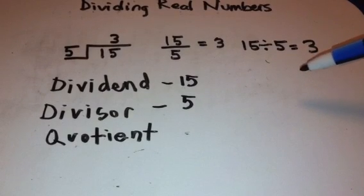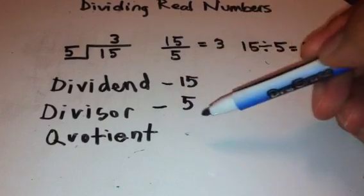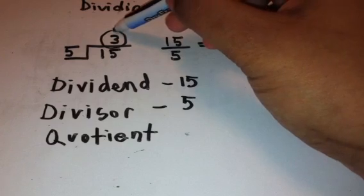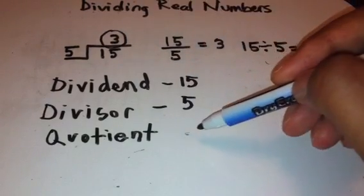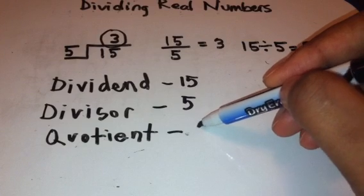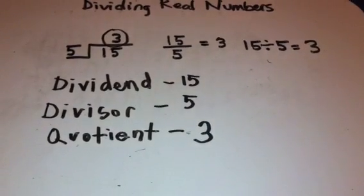And our quotient is basically synonymous with the word answer. It is basically going to be how many times the divisor is going to go into the dividend or your final answer. And here our quotient is 3.